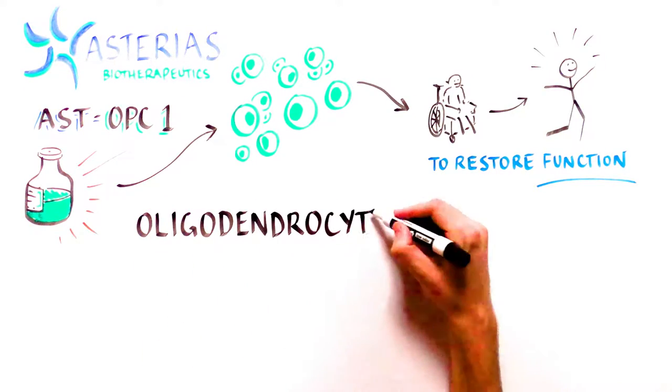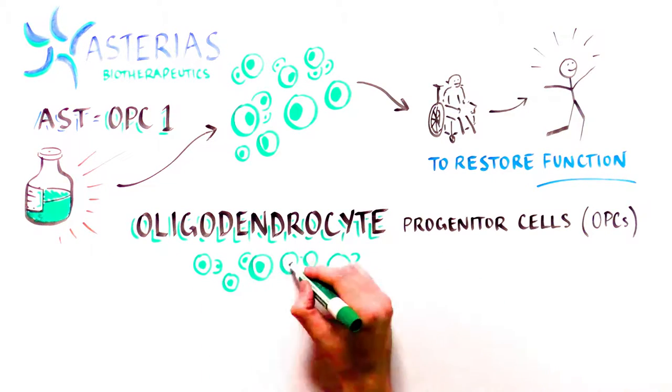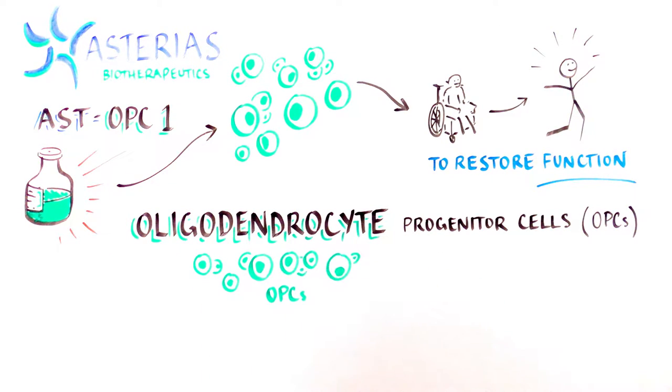Their approach uses a cell type known as oligodendrocyte progenitor cells, or OPCs. These OPCs are made from human embryonic stem cells, which can become any cell type in the body.